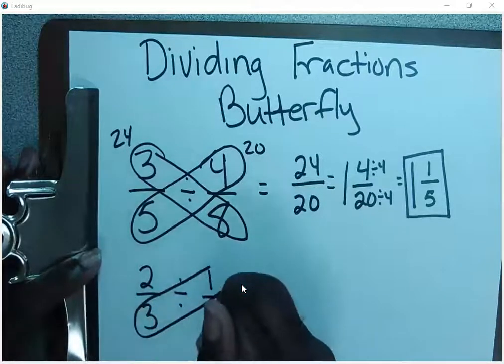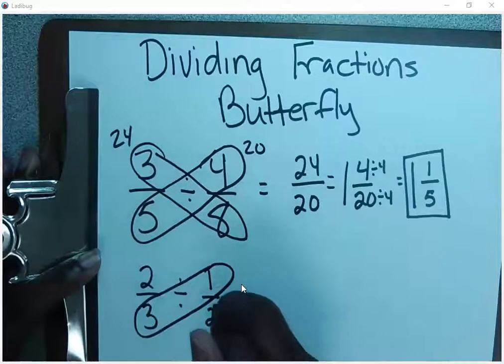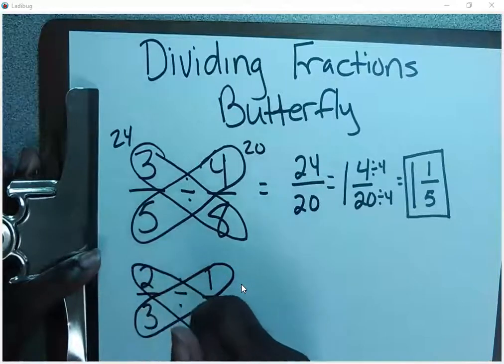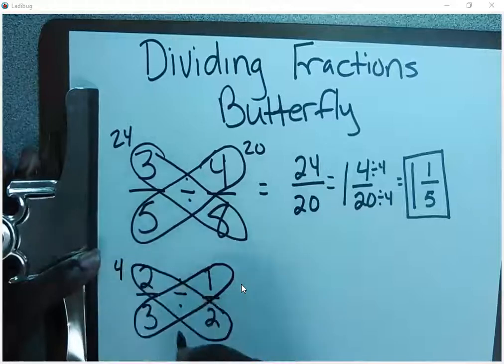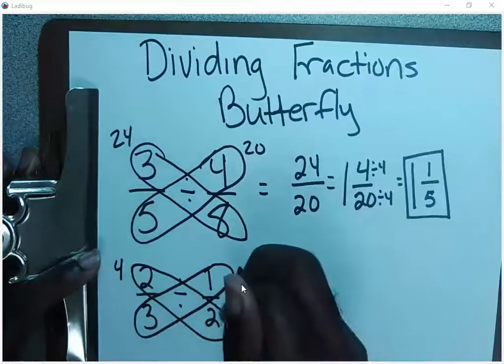That means our opposite numerator will multiply against our opposite denominator. In this case, two times two is four. Three times one is three.